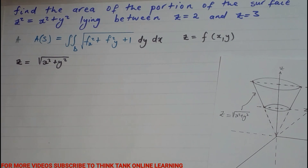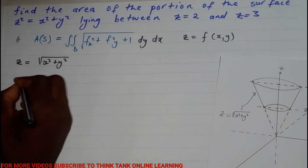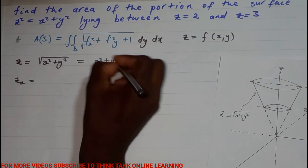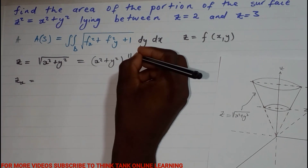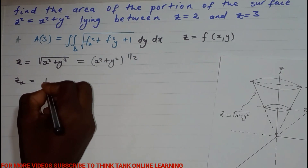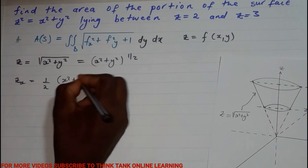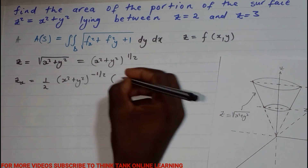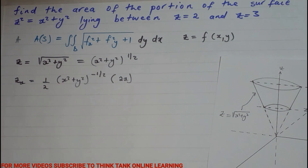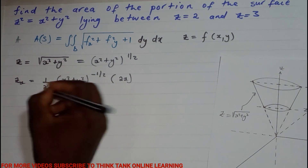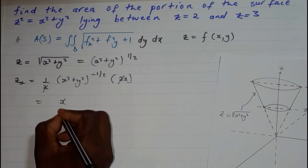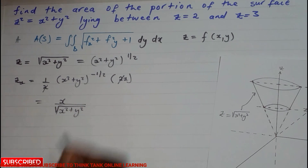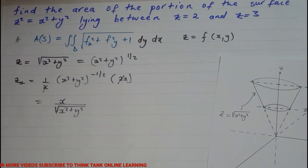Let's find z_x. I'm going to treat this as (x² + y²)^(1/2). Dropping the power: (1/2)(x² + y²)^(−1/2), multiplied by the inner derivative 2x. This simplifies to x over √(x² + y²).